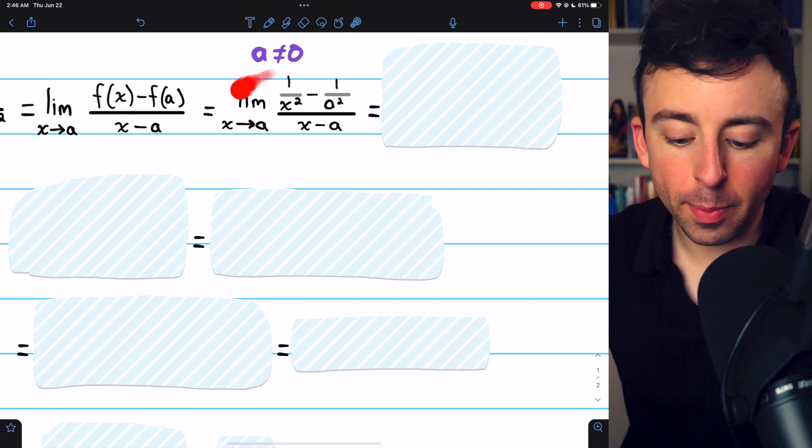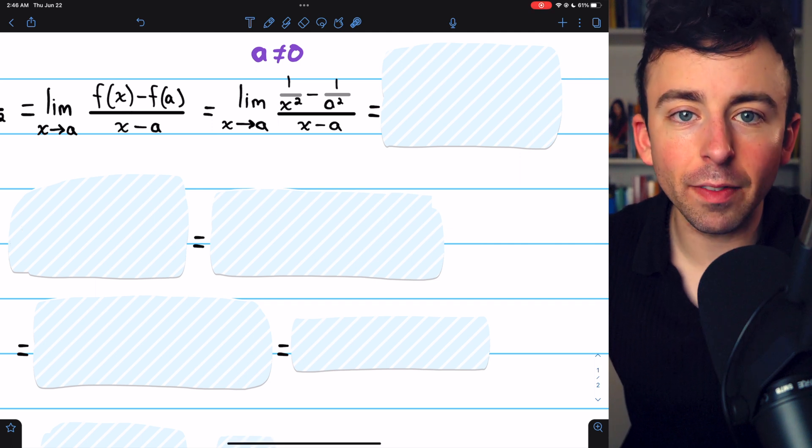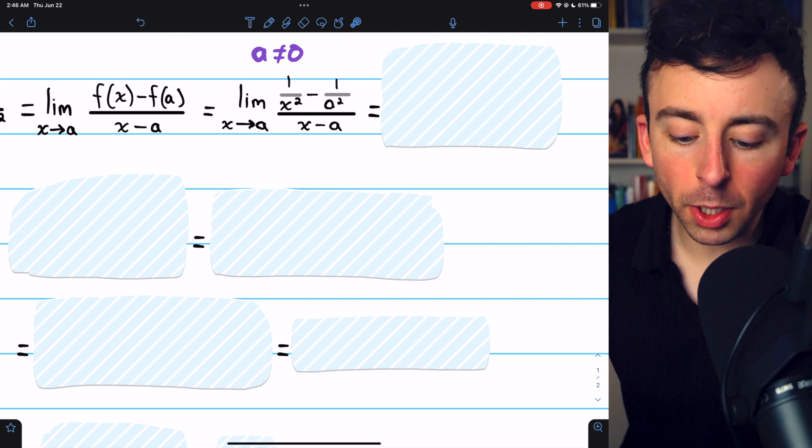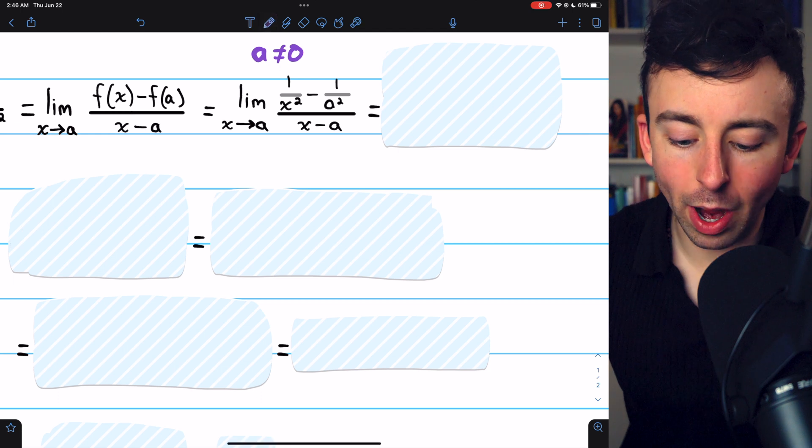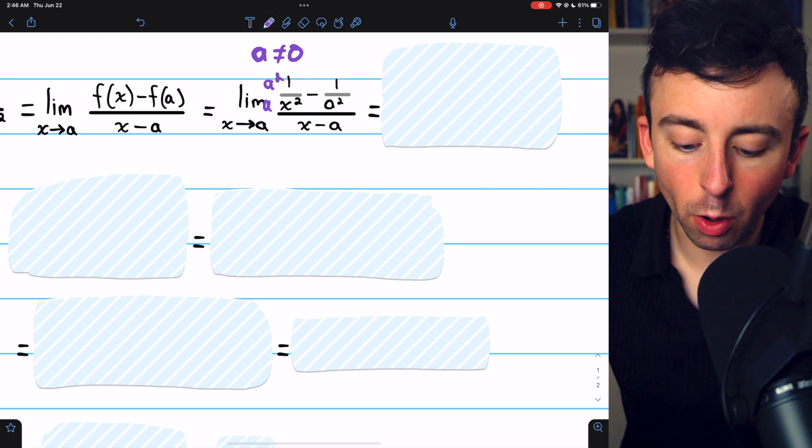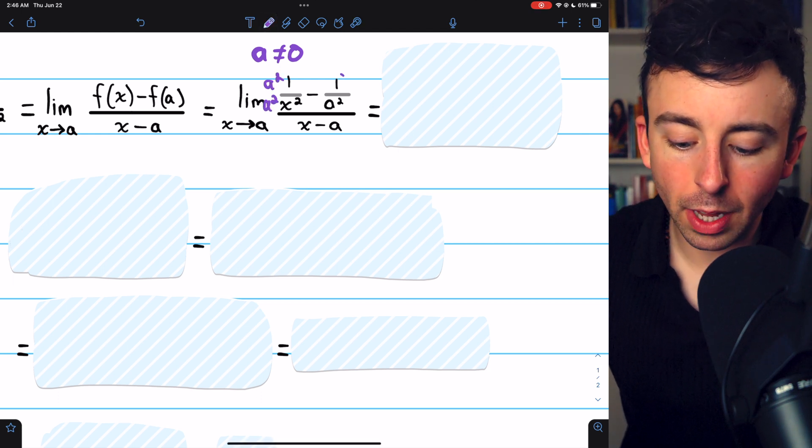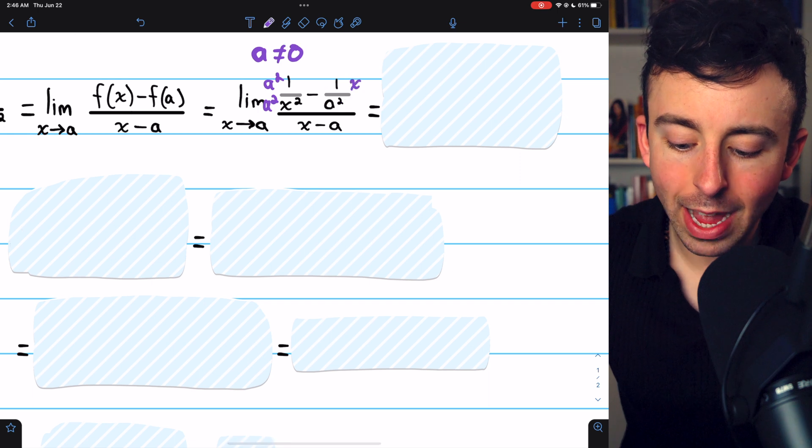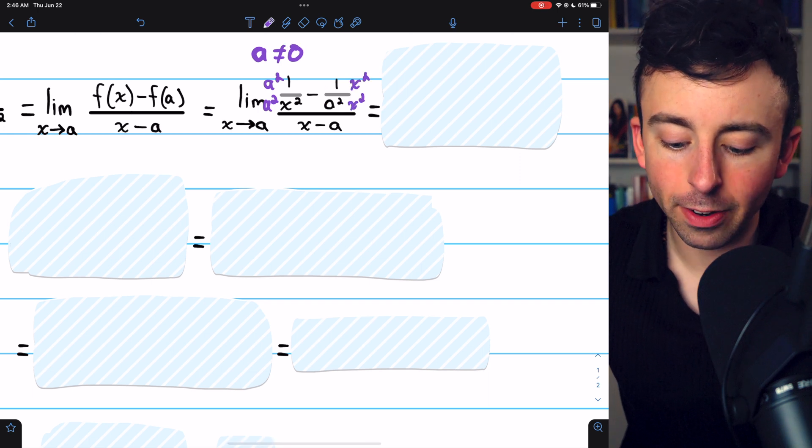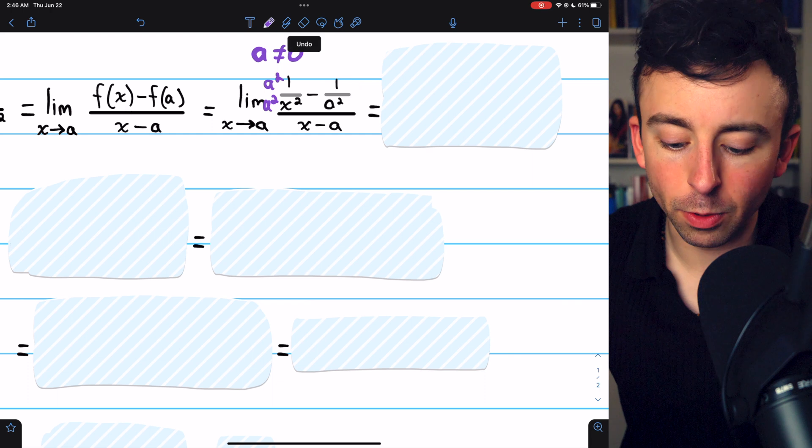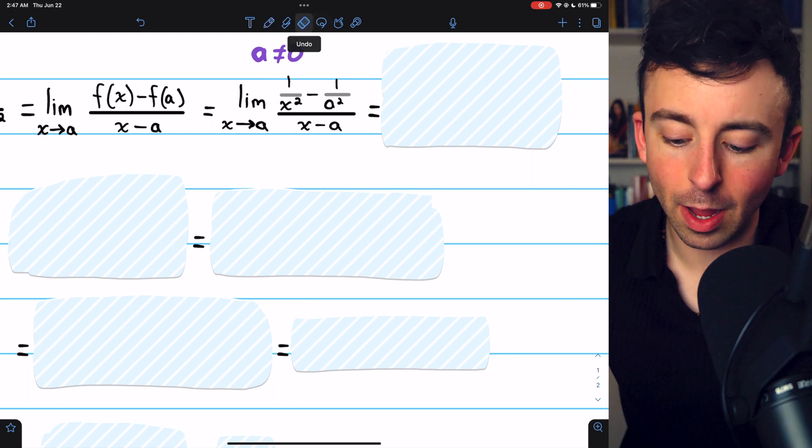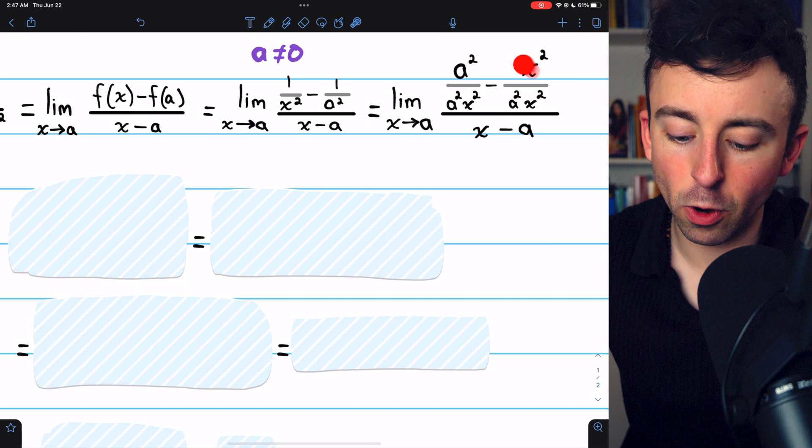The next step we'll take from here is to combine these two fractions. So we're going to have to give them common denominators. To do that, we'll multiply 1 over x squared by a squared over a squared, and we'll multiply 1 over a squared by x squared over x squared. Then they'll both have denominators of a squared times x squared. And that gets us here.